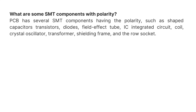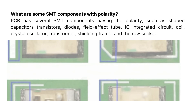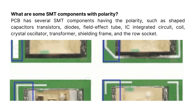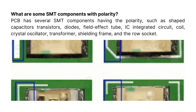Some SMT components with polarity include: shaped capacitors, transistors, diodes, field effect tubes, IC integrated circuits, coils, crystal oscillators, transformers, shielding frames, and row sockets.